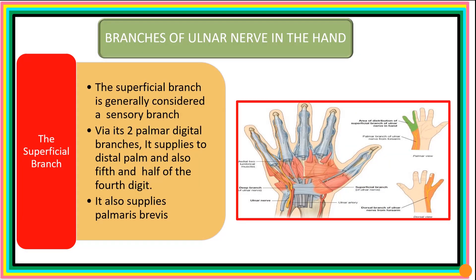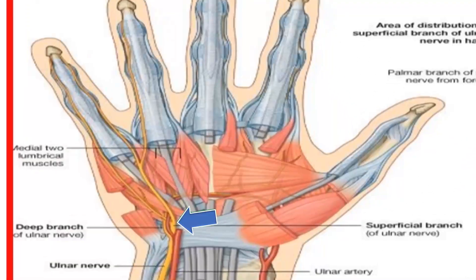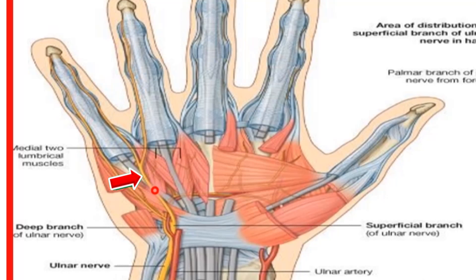In the hand, the two terminal branches are the superficial and the deep. The superficial branch is generally a sensory branch, but it gives a muscular branch to the palmaris brevis. After giving this branch, the superficial branch terminates as two palmar digital nerves supplying the distal palm and the fifth and half of the fourth digit.